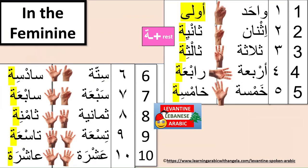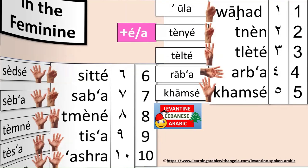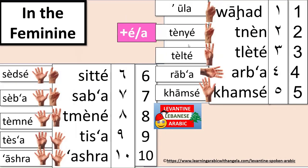So here you can see: واحد — الأول, الأولى in the feminine. تاني — تانية. تالت — تالتة. رابع — رابعة. خامس — خامسة. You can see the round ta at the end. سادس — سادسة. سابع — سابعة. تامن — تامنة. تاسع — تاسعة. And عاشر — عاشرة. You can pause the screen here and read the transliteration in the feminine.